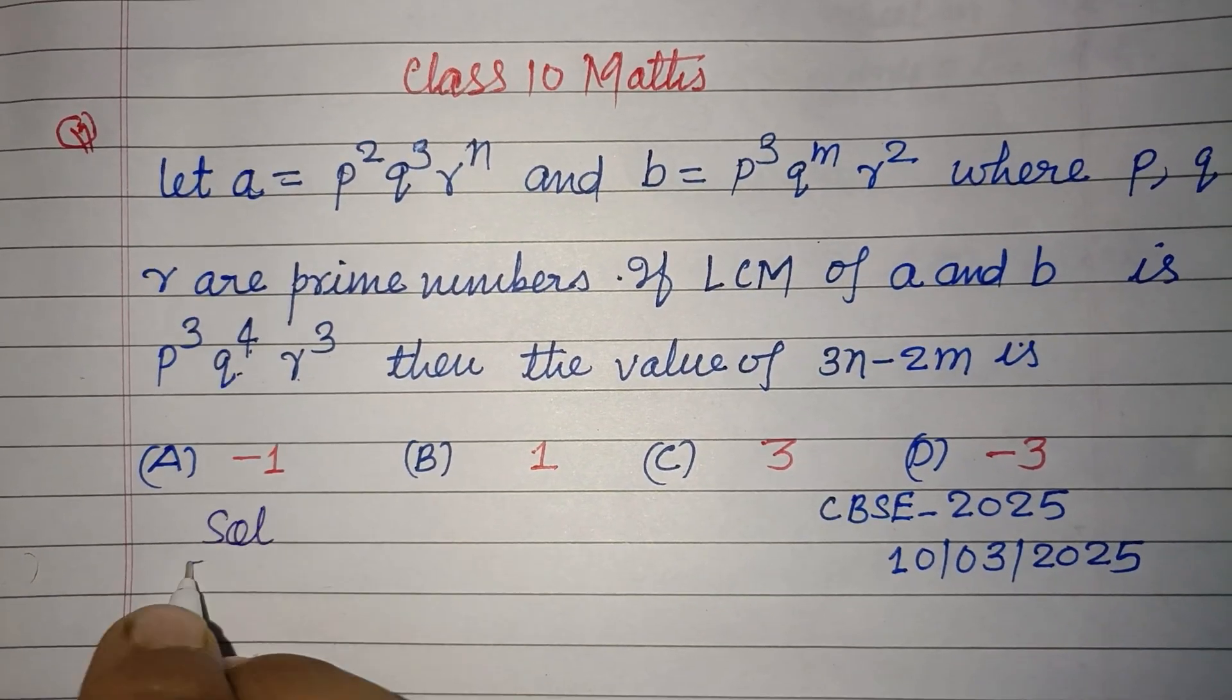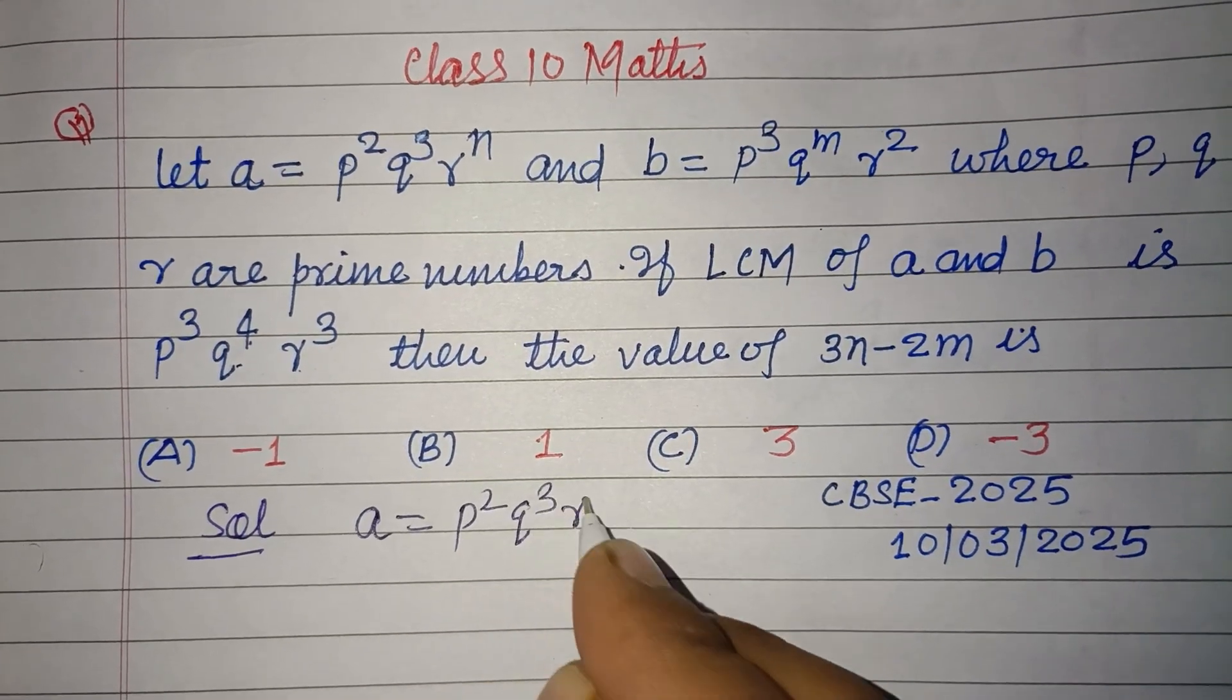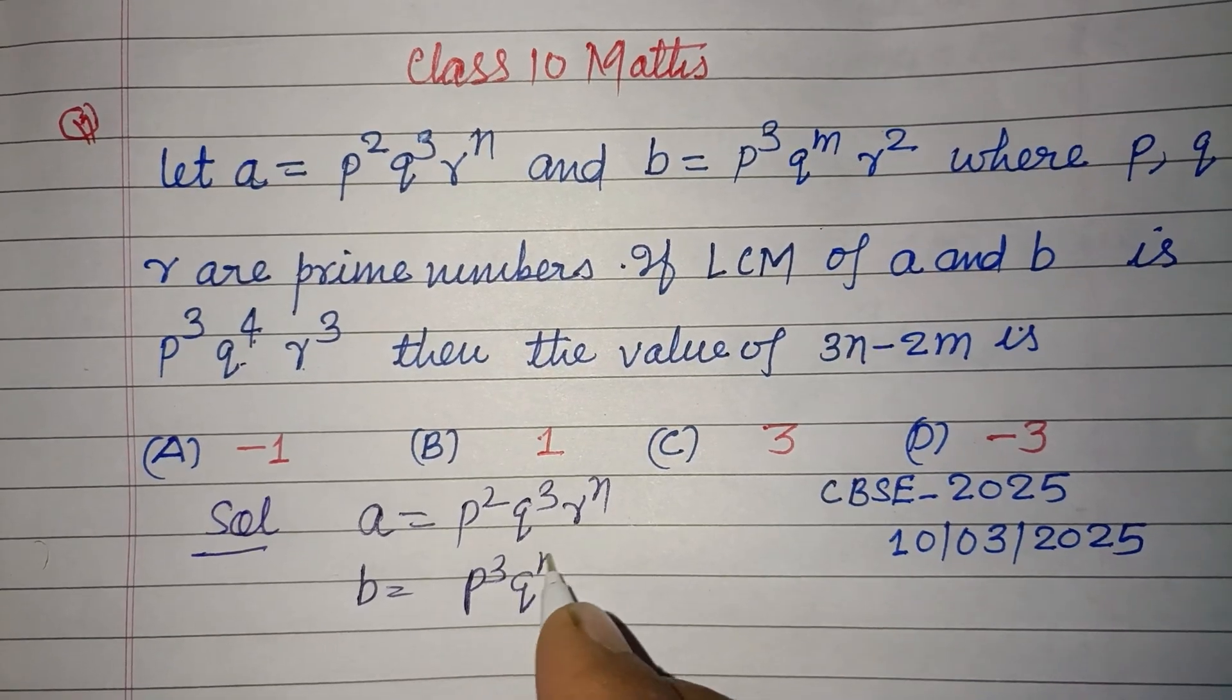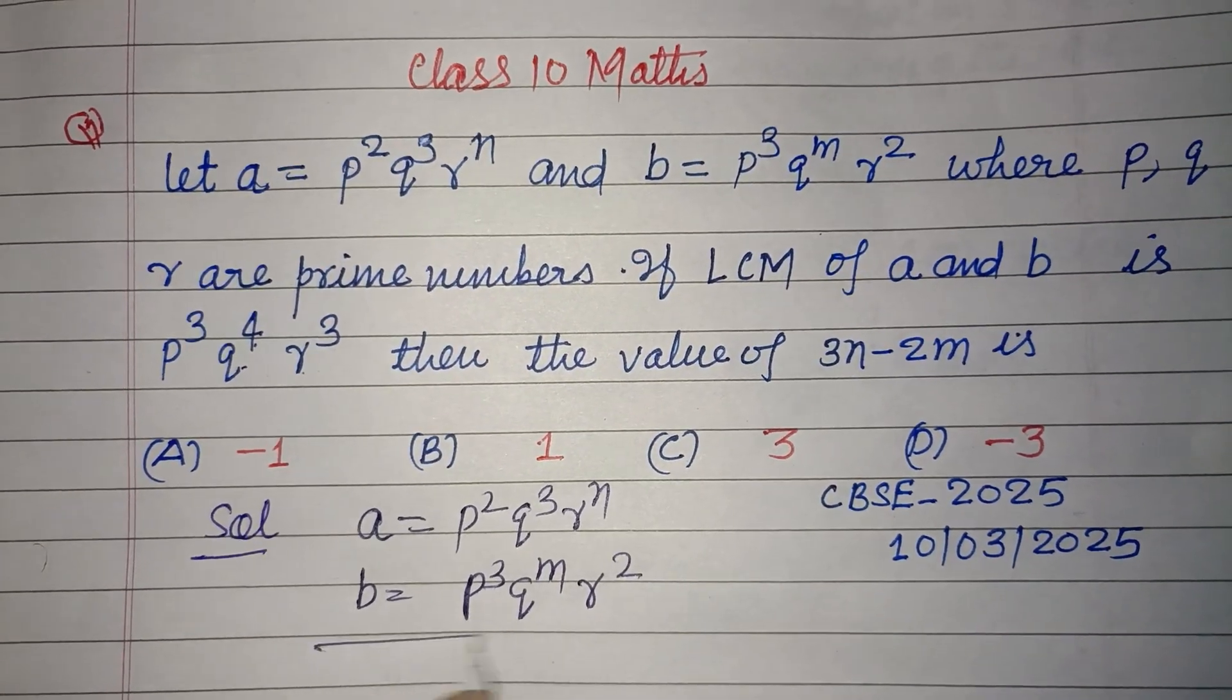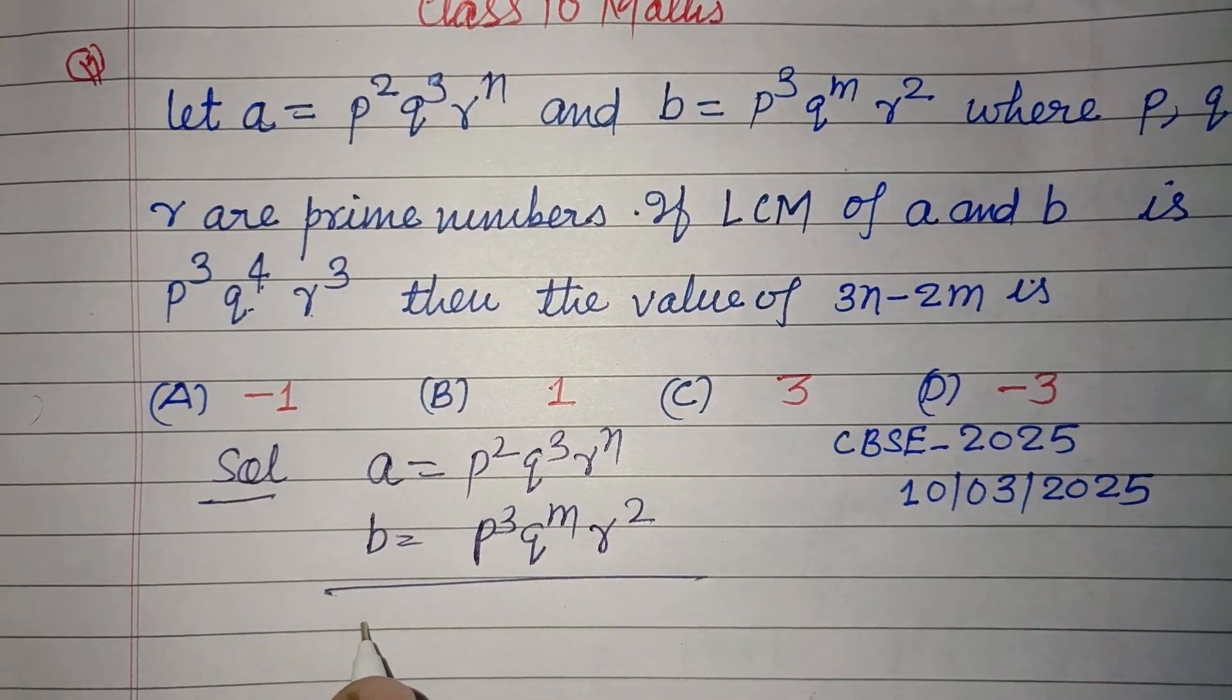So students, first we find the LCM of these numbers, which is also given. b is P cubed Q to the power m, R to the power 2. Since P, Q, R are prime numbers, the LCM will be here P cubed Q, R are prime number.